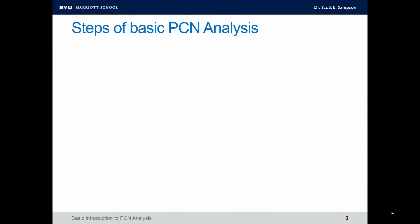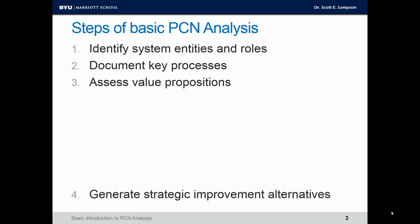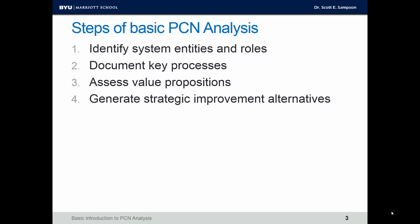There are a number of steps in PCN analysis, but we're going to look at four basic steps. Number one is to identify systems, entities, and roles. Number two is to document key processes. Number three, assess the value propositions. And four, generate strategic improvement alternatives.